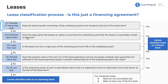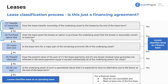The second criterion: does the lease grant the lessee an option to purchase the underlying asset that the lessee is reasonably certain to exercise? Is there something in the lease agreement that says you can buy this car at any point, and are you reasonably certain to exercise that? If so, it's a financing lease. If any one of these five criteria is met, it's considered a finance lease.